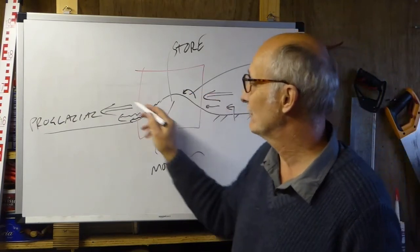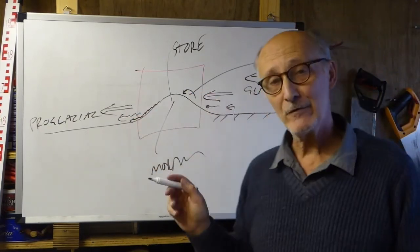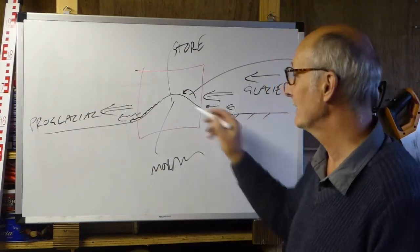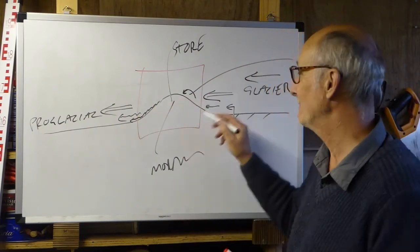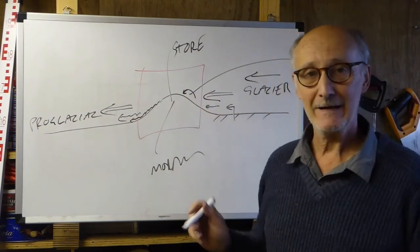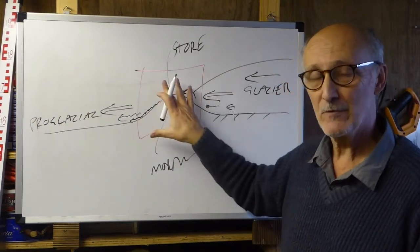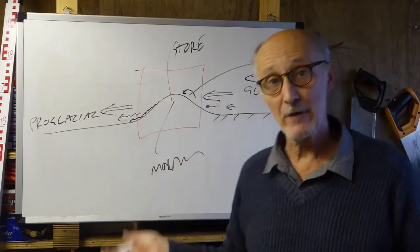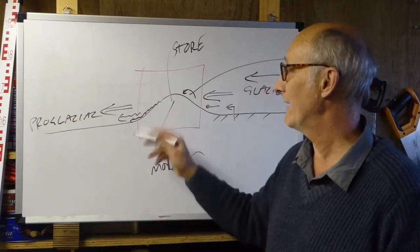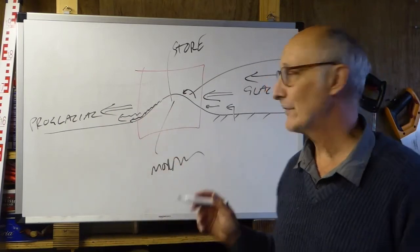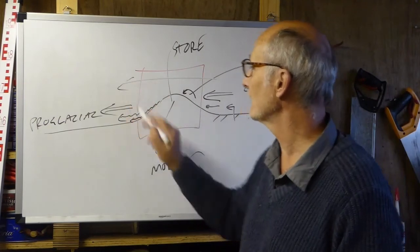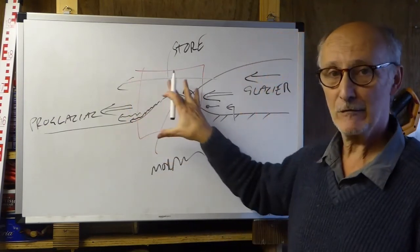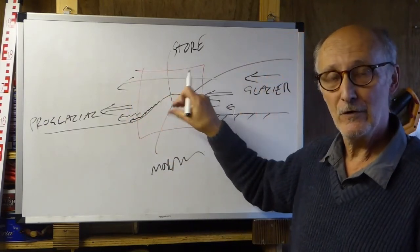So we have inputs, and we have outputs. And just like we were talking about with the mass balance of the glacier earlier, the size of this moraine is going to depend on the inputs and the outputs. So whether this is an equilibrium system with the moraine staying the same size, or if it's going to be growing, or if it's going to be shrinking, that depends on the rate of input and the rate of output. So we have a flux through this store, and the store can grow or shrink.